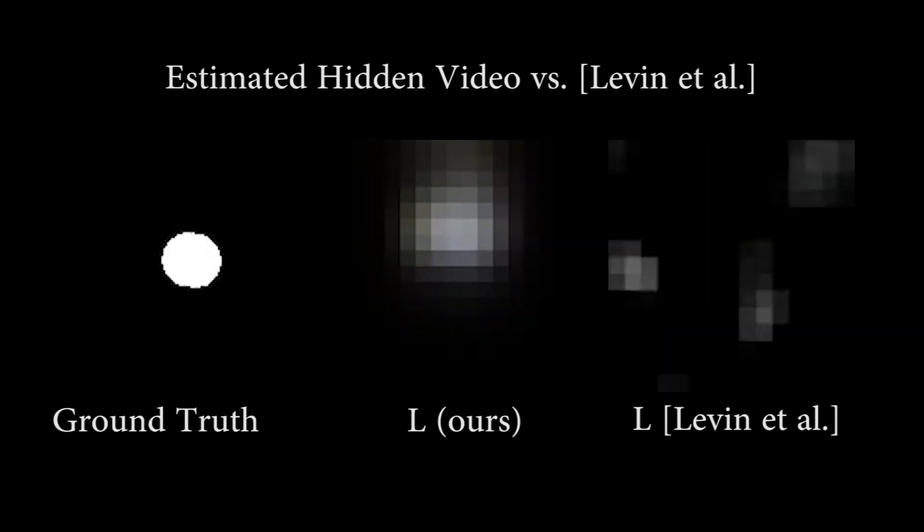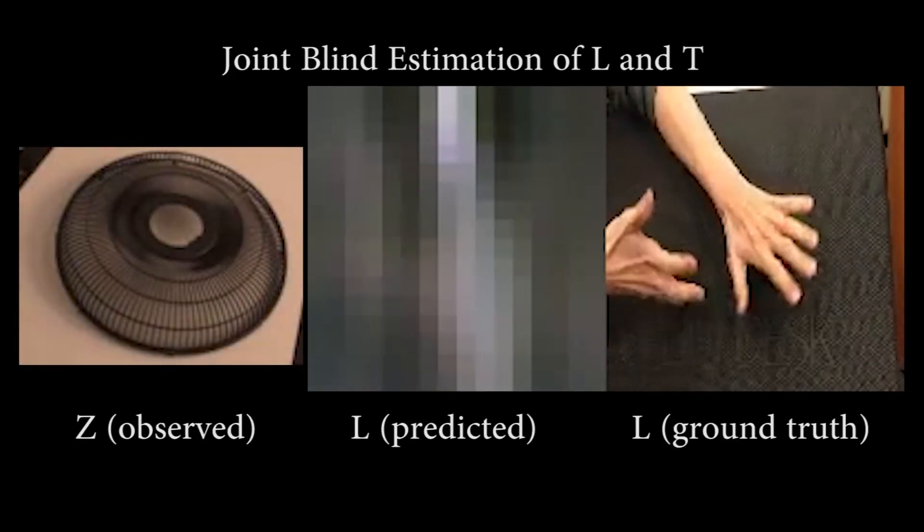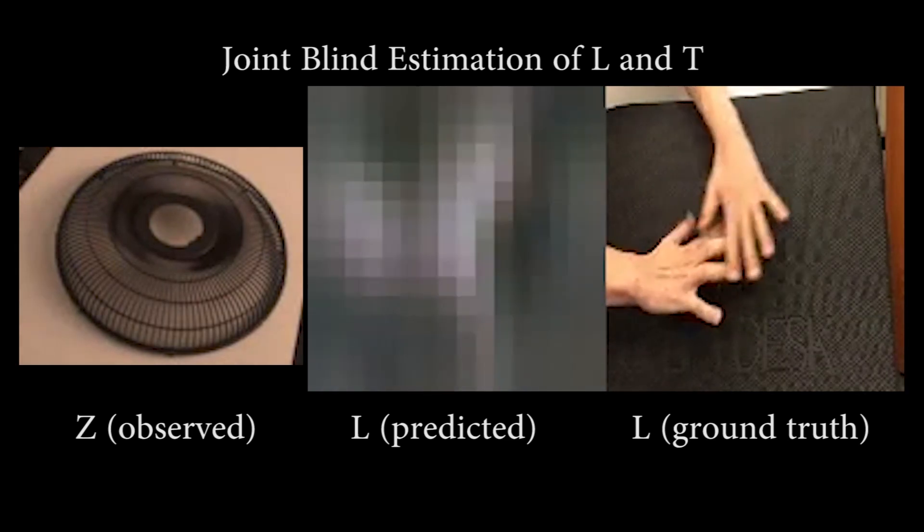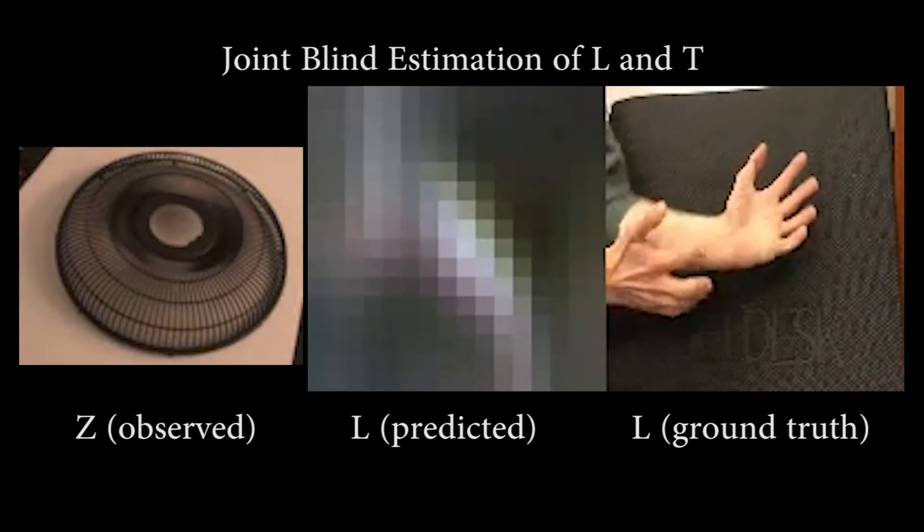We now show a selection of other videos recovered by our method. As can be seen, the independent motions and gestures of the hands are recognizable in the estimated hidden video.